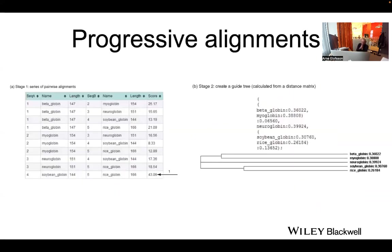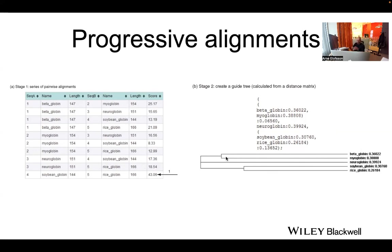The idea of progressive alignment is that you start with a set of sequences — in this case five globins: beta-globin, myoglobin, neuroglobin, soybean, and rice. You do pairwise alignments and calculate distances. The closest pair found here is rice and soybean with the highest score of 43, so you align those first. Then the next closest pair is beta-globin and myoglobin with a score of 75, and then you add neuroglobin and progressively align more sequences.